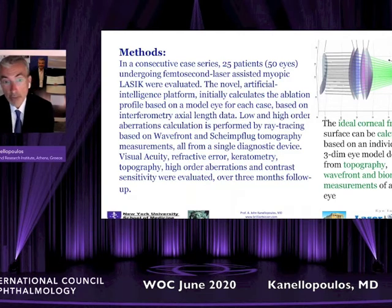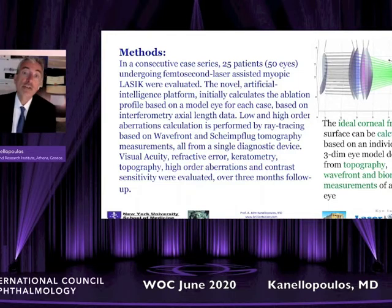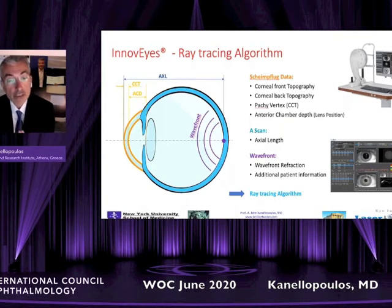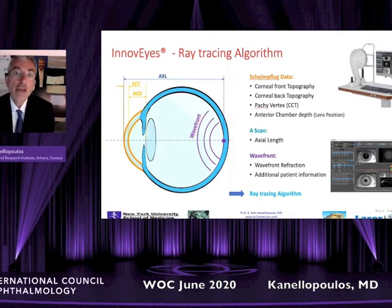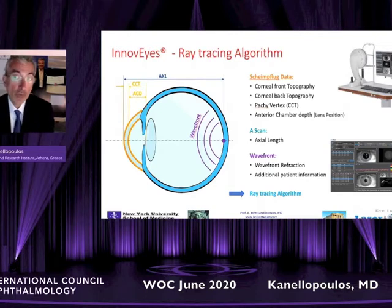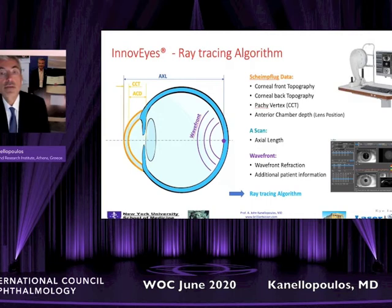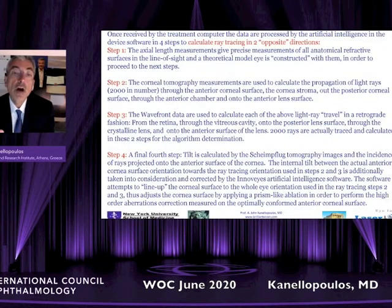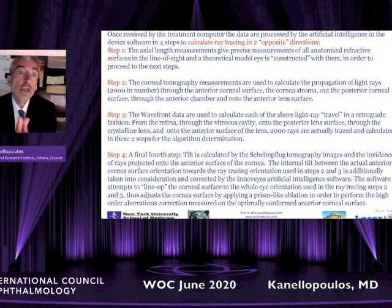In parallel to introducing this technology, I'll share data we presented at ASCRS this year — a virtual meeting last May. These data are captured by a single device called Sitemap. It's a commercially available device that Alcon adopted and transformed into a diagnostic device whose data are used to calculate ray tracing. This single device performs three different measurements: Scheimpflug tomography, biometry through interferometry, and a Hartmann-Shack wavefront measurement with large and small pupils. These three diagnostic entities are then used through the automated AI of the InnoVise ray tracing software to calculate the perfect high-order and lower aberrations treatment for each eye.